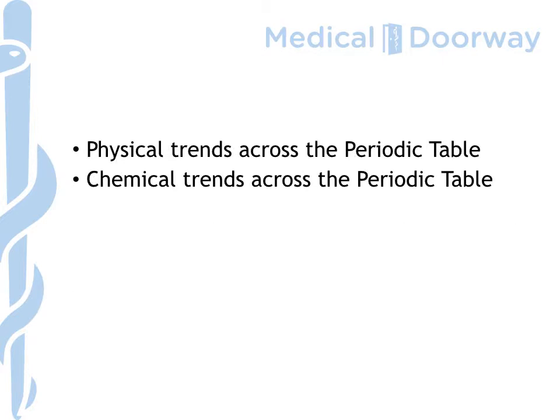We're going to look at physical trends across the periodic table, and this will be in particular period three, because that will marry up with our chemical trends across the periodic table — which again we're going to look at in period three. We're going to look at the elements, their oxides and chlorides, and we're also going to look at hydrides, which is largely left out of A-level syllabuses these days.